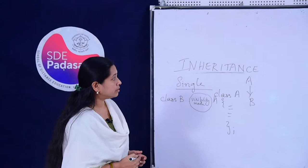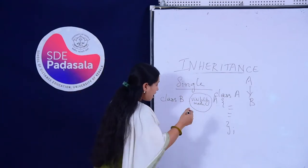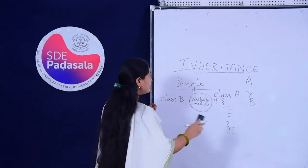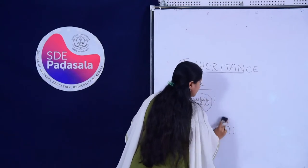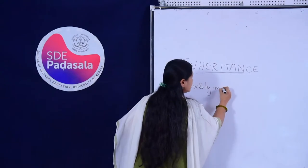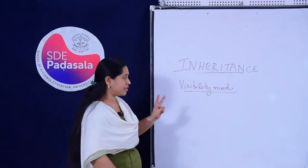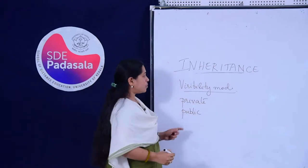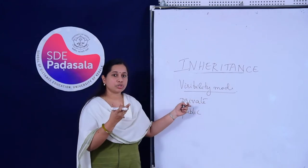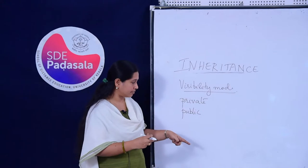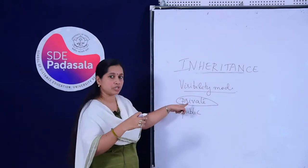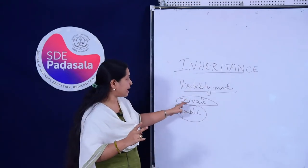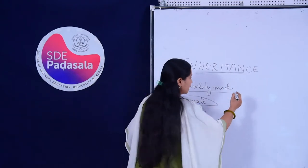Visibility mode determines how the members of the base class will be inherited by the derived class. Visibility mode can have two values: it can either be private or it can be public. In other words, visibility mode specifies whether you are going to inherit the data members and member functions of the base class in a private manner or in a public manner. To understand this concept more clearly, we will look at an example.